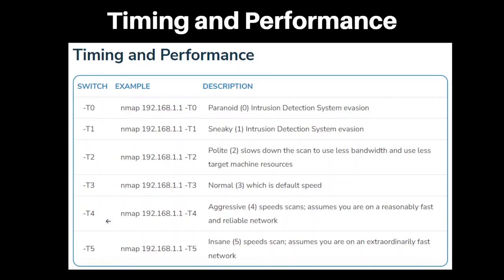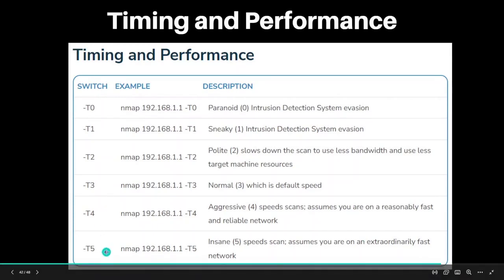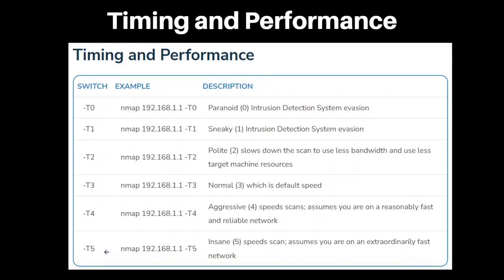T5 is the most aggressive and fastest timing option. It is suitable for scans that need to be completed quickly on extraordinarily fast networks.